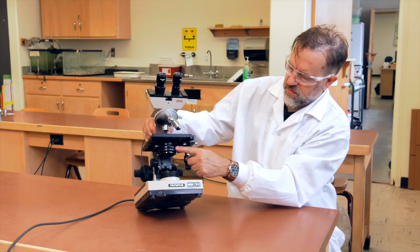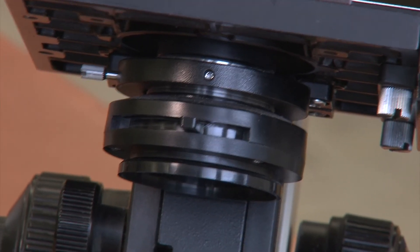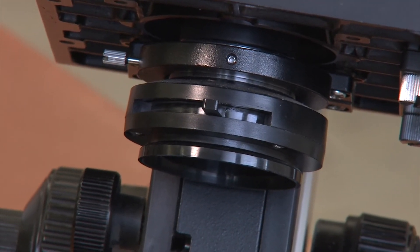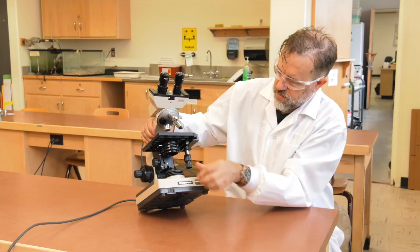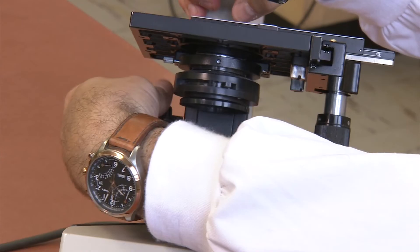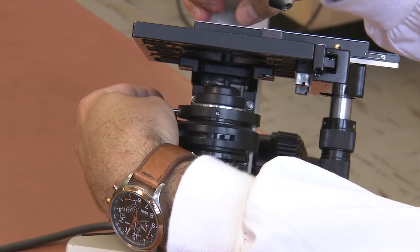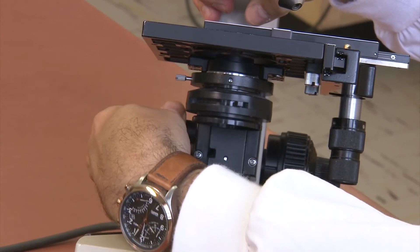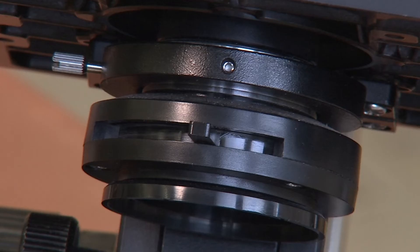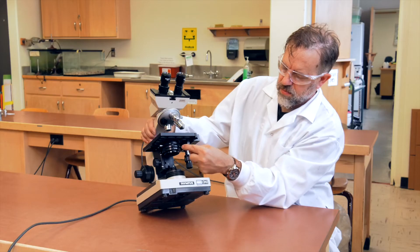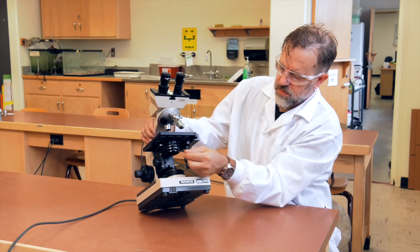Directly below the stage are the condenser and iris diaphragm assembly. The condenser focuses the light directly onto your sample and is controlled by the condenser adjustment knob, located on the left of the stage and assembly. The iris diaphragm adjusts the amount of light that passes through your specimen and is used to increase the depth of field, which means that a thicker plane of your sample will be in focus.